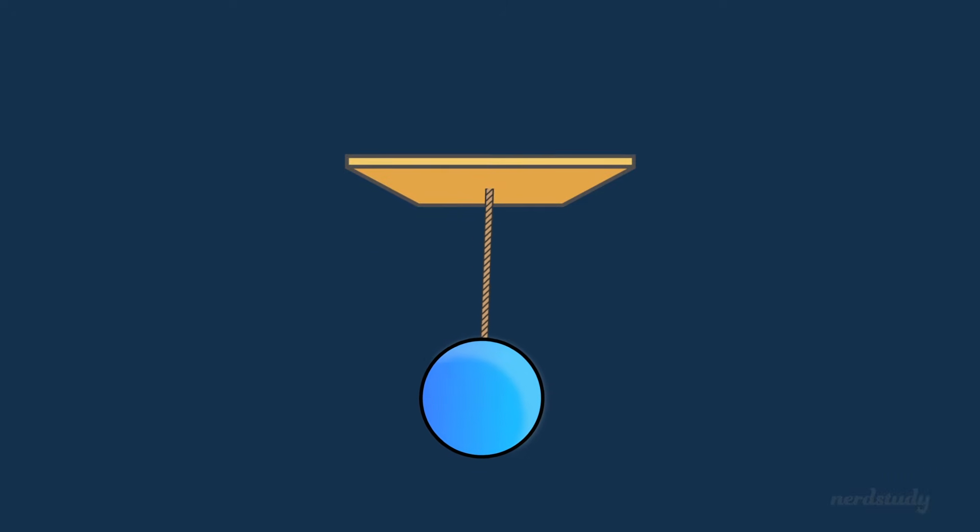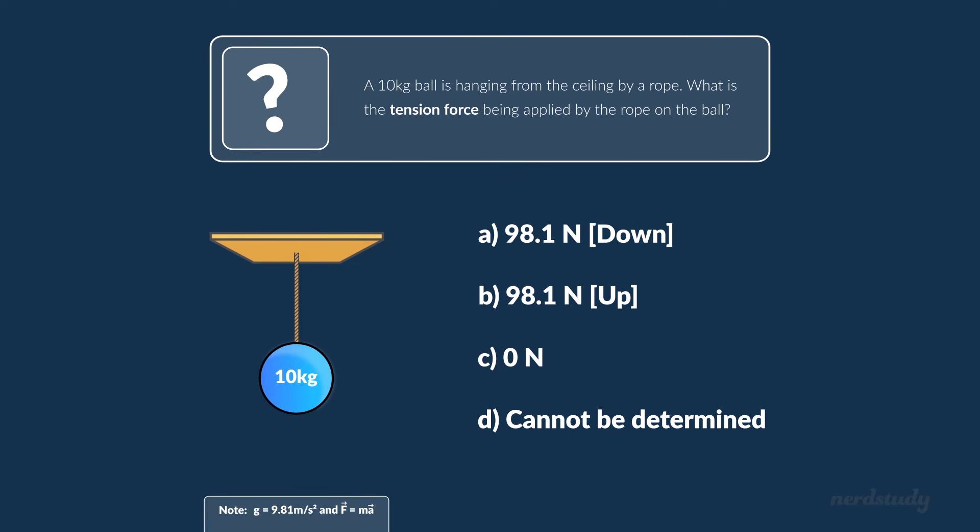Alright, I think we've got enough knowledge to look at a very simple example. Let's look at the ball on a rope again. If the ball has a mass of 10 kilograms, what is the tension force? How would we solve a question like that? Well, the answer would be 98.1 Newtons upward. How did we get that answer?